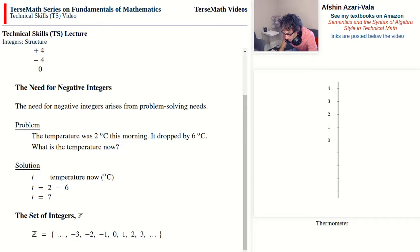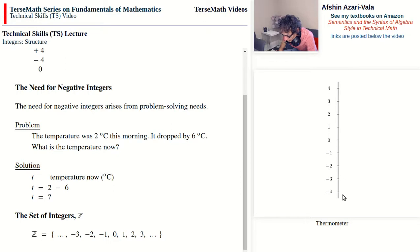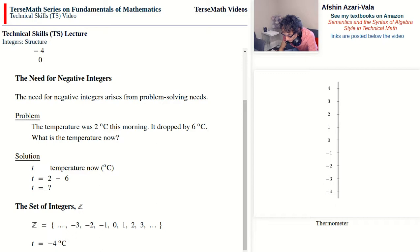That's why we introduced the set of integers, which contains numbers such as negative 3, negative 2, negative 1, 0, 1, 2, 3, and so on. With these numbers, we can improve the reading of our thermometer by adding negative 1, negative 2, negative 3, and negative 4. Now we can answer the question: the temperature now is negative 4 degrees Celsius.